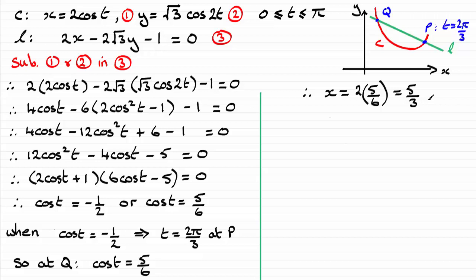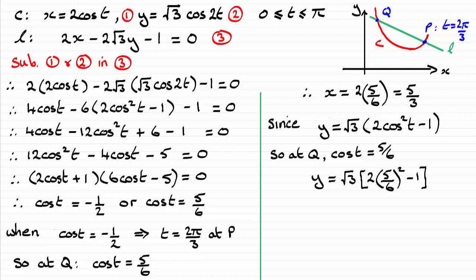Substituting cos t equals 5 sixths into equation 1 gives x equals 2 times 5 sixths, which equals 5 thirds. For the y-coordinate, using the identity cos 2t equals 2 cos squared t minus 1, y equals root 3 times (2 cos squared t minus 1). Substituting cos t equals 5 sixths gives y equals 7 eighteenths root 3. So the coordinates of Q are (5 thirds, 7 eighteenths root 3).